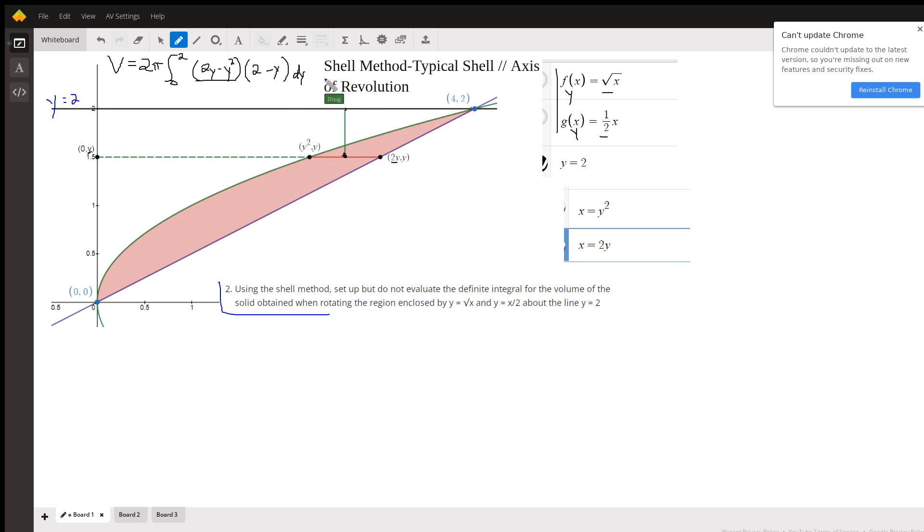But here's the thing you need to remember when you're using the shell method: a typical shell is parallel to the axis of revolution. Here's the axis of revolution. If I add another little line right here, we can see the thickness of the shell.